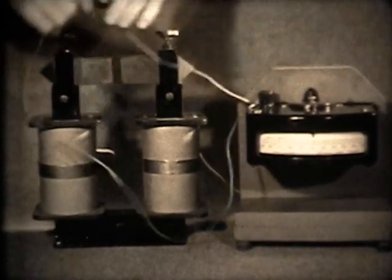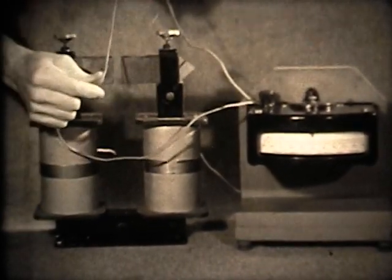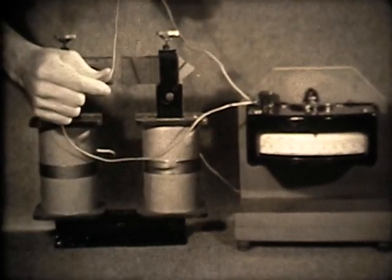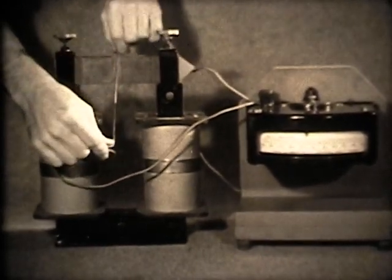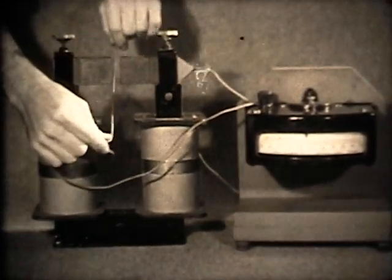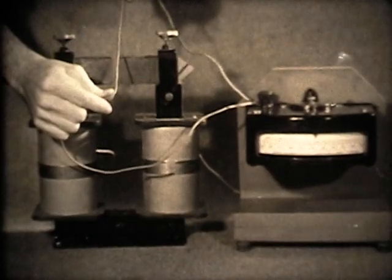Here you see the same effect. But this time we move the wire instead of the magnet. And to make the magnetic field stronger, we use electromagnets instead of simple bar magnets. Watch the galvanometer needle register the flow of current as we move the wire through the magnetic field.